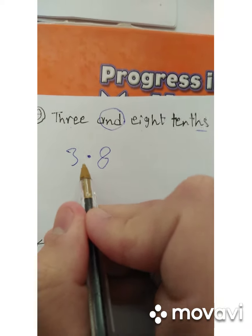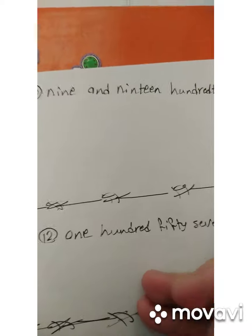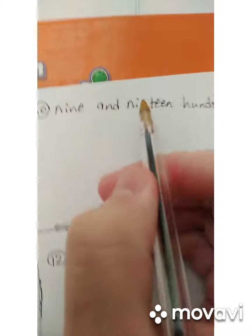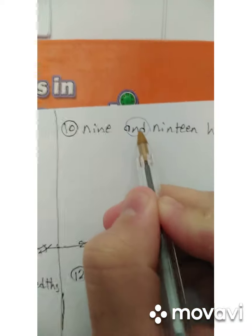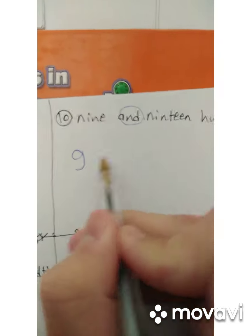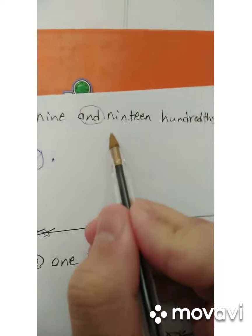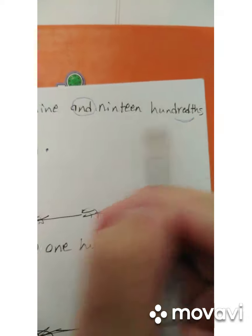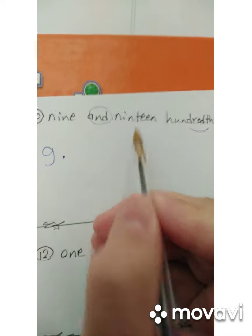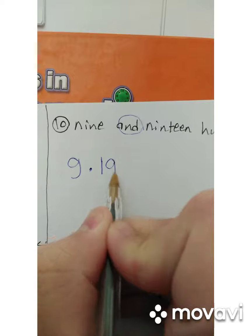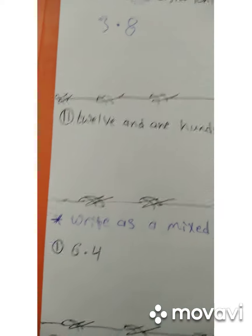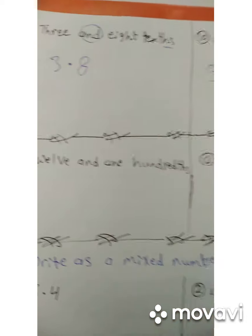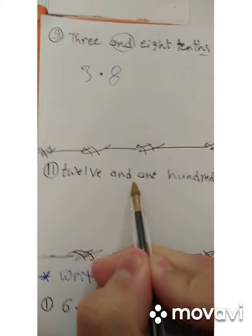Number ten: nine and nineteen hundredths. The whole is nine — write nine and put the decimal point. Nineteen hundredths means two digits after the decimal, so write 19. We get nine point nineteen, read as nine and nineteen hundredths.